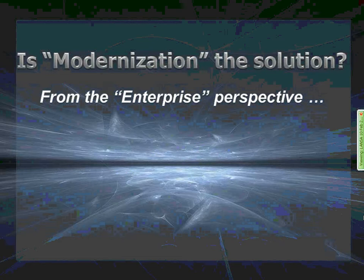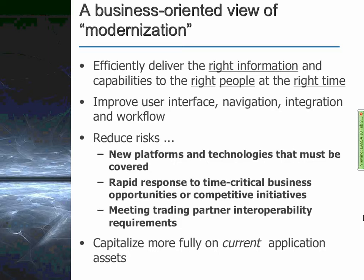To look at how we might approach modernization, let's start outside of IT — at a higher level — because after all, we are serving our enterprises. From the enterprise perspective, modernization really isn't a question about technology per se. It's essentially what we've always thought in IT: to find better ways to efficiently deliver the right information and capabilities to the right people in the organization at the right time. The enterprise is looking to improve applications, user interfaces, ease of navigation, and to have a more integrated and mature approach so that we no longer need silos, but have full interchange and workflow practices supported.